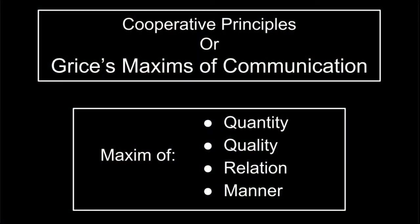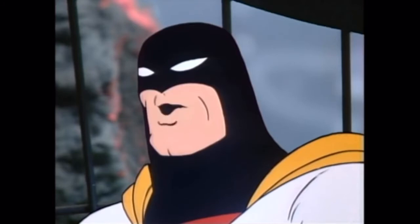Now that we have seen some examples, let us have a quick recap. We have the maxim of quantity: make your contribution as informative as is required — not too much information. The maxim of quality: make your contribution one that is true; do not say that which is false, and do not say that for which you lack adequate evidence. The maxim of relation: be relevant! And lastly, the maxim of manner: be clear, avoid obscurity, avoid ambiguity, be brief, and be orderly.